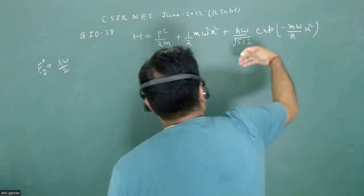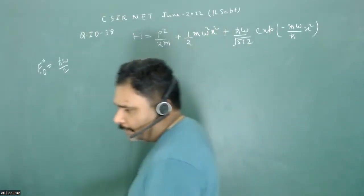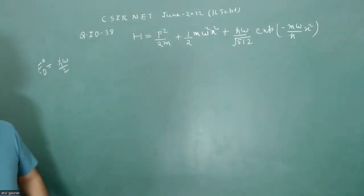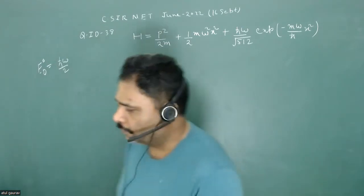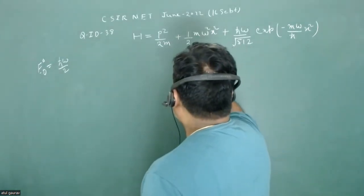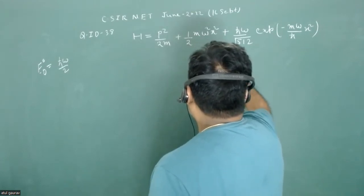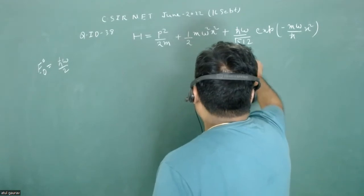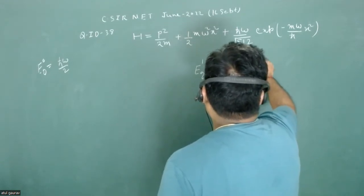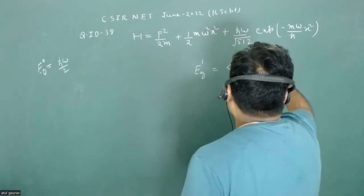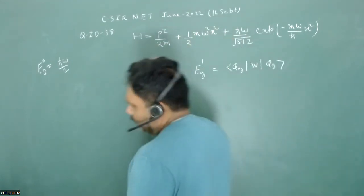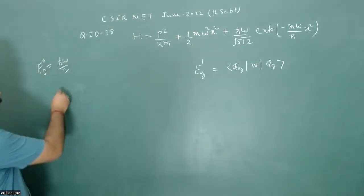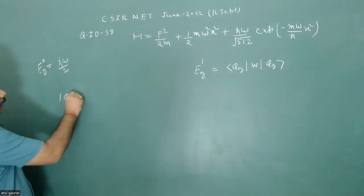We need to use first-order perturbation theory to find the correction term. For the ground state, we calculate e_g^(1), which equals the expectation value of the perturbation W in the ground state: ⟨φ_ground | W | φ_ground⟩.